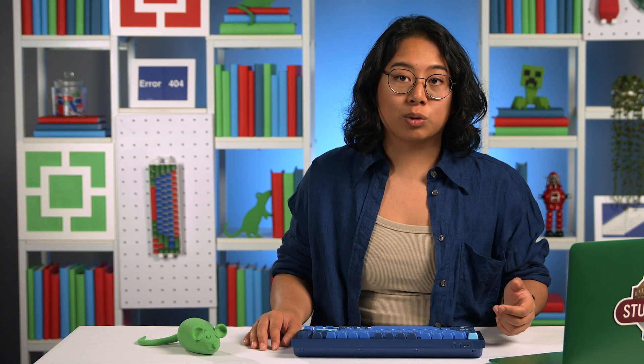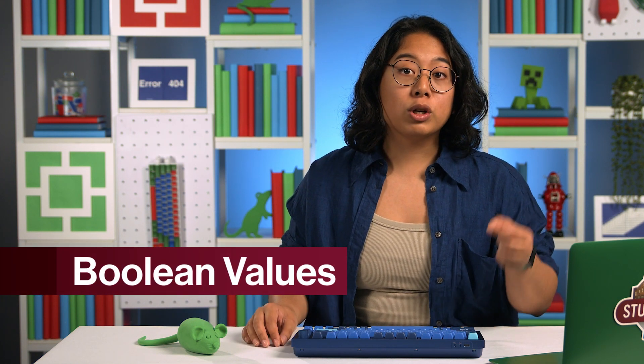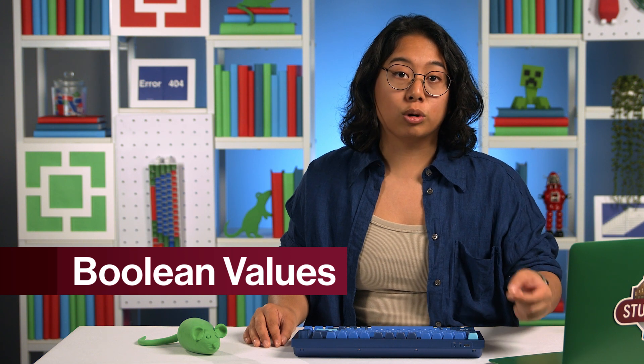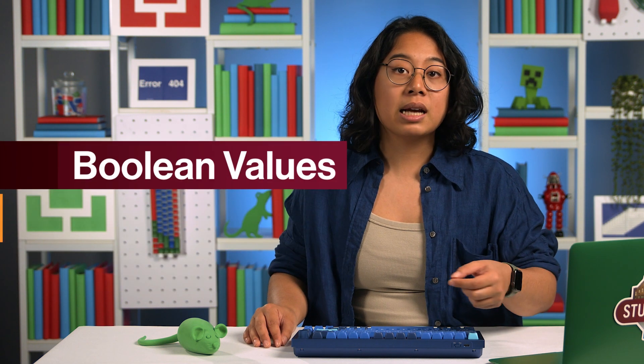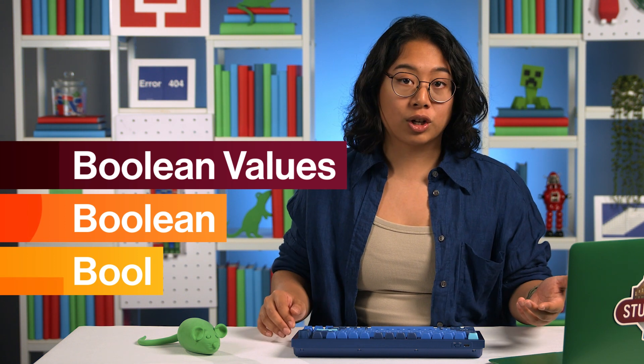But asking if one thing is equal to another only gets you so far. There are so many more types of yes or no questions we could ask that can be even more meaningful. In programming, statements that only have yes or no answers are called Boolean expressions. So our question about the weather is a Boolean expression. When we're programming, instead of yes and no, we say true and false, which are called Boolean values. So it was true that the temperature was equal to 65 degrees. And anytime we hear the word Boolean or bool, if you're in the know, we're dealing with true or false questions. And these questions come in a lot of shapes and sizes.